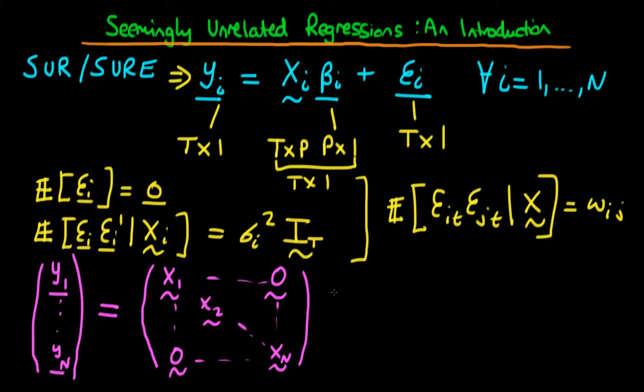And then if we multiply this by the stacked parameter vectors, so we have beta_1, beta_2, through to beta_n, we are nearly there in terms of reproducing this particular equation at the top here, but for all N individuals.